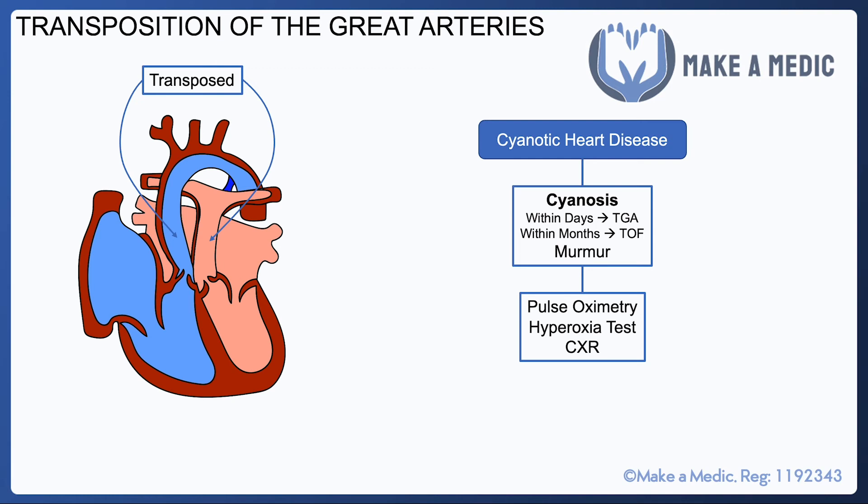In transposition of the great arteries, if the two circuits are completely separate, then even giving high-flow oxygen will make no difference, because the pulse oximeter is only detecting oxygen saturation of the peripheral blood from the right side of the heart, which is no longer mixing with blood from the lungs — so you will not see an improvement. A chest X-ray may also be performed as it can show features pointing you in one direction or the other.